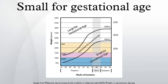Infants born SGA with severe short stature are defined as having a length less than 2.5 standard deviation scores below the mean. A related term is low birth weight, defined as an infant with a birth weight of less than 2,500 grams, regardless of gestational age at the time of birth.